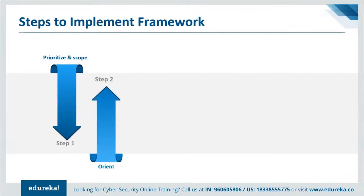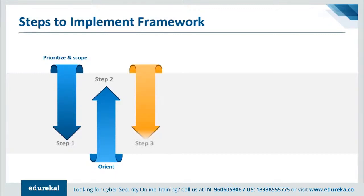Step two is to orient yourself. Once the scope of the cybersecurity program has been determined, the organization identifies related systems and assets, regulatory requirements, and overall risk approach. The organization then consults sources to identify threats and vulnerabilities applicable to those systems and assets. Step three is to create a current profile: the organization develops a current profile by indicating which category and subcategory outcomes from the framework core are currently being achieved. If an outcome is partially achieved, noting this will provide useful baseline information.